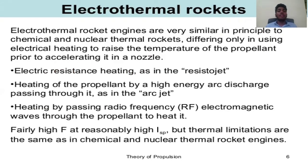Electrothermal rockets are very similar in principle to chemical and nuclear thermal rockets, differing only in using electric heating to raise the temperature of the propellant prior to accelerating it in a nozzle. Methods include electric resistance heating as in the resistor jet, heating by high-energy arc discharge as in the arc jet, and heating by passing radio frequency (RF) electromagnetic waves through the propellant. They have fairly high thrust and reasonably high ISP, but thermal limitations are the same as in chemical and nuclear thermal rocket engines.